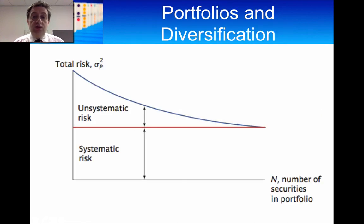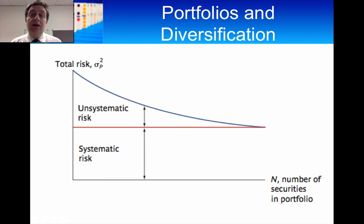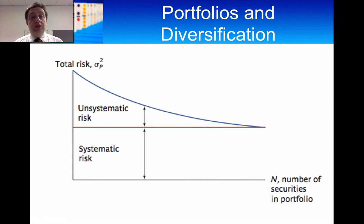We can show this graphically — you'll have seen this graph before. The unsystematic part decreases toward zero as we increase N, leaving just the systematic part: the 10% plus F. As we increase the number of assets in the portfolio, the diversification effect results in the risk of that portfolio decreasing — but it doesn't decrease to zero, because there's a systematic market-wide effect. The risk of a portfolio is made up of systematic risk plus unsystematic risk, which disappears as portfolio size increases.